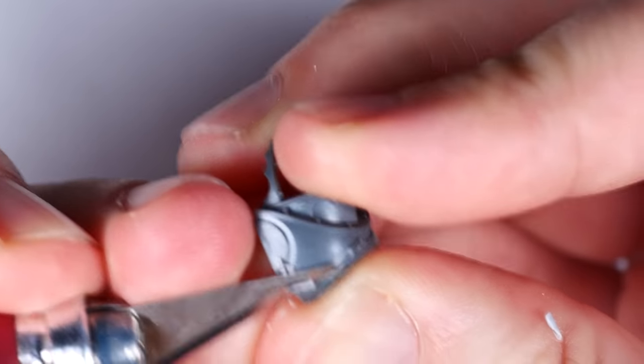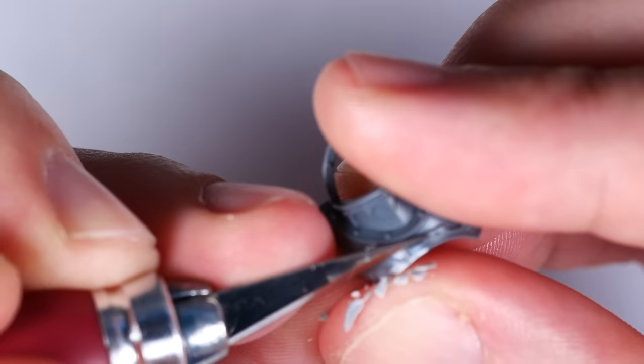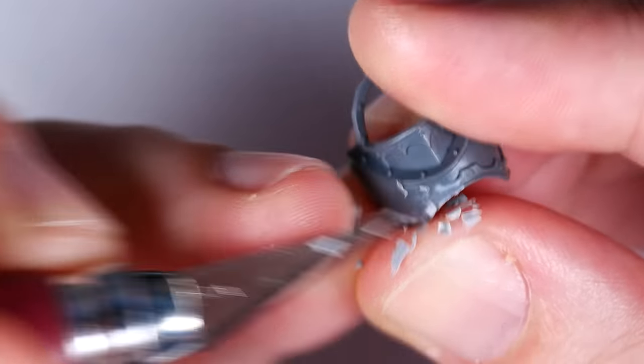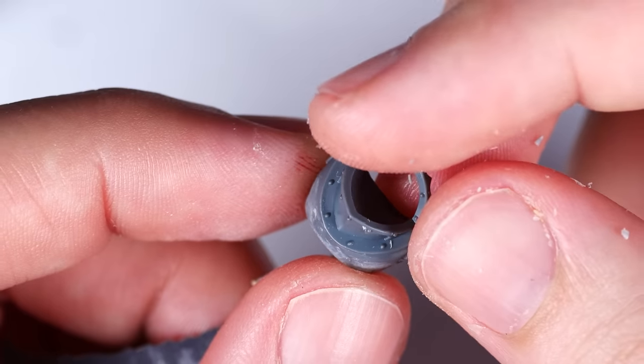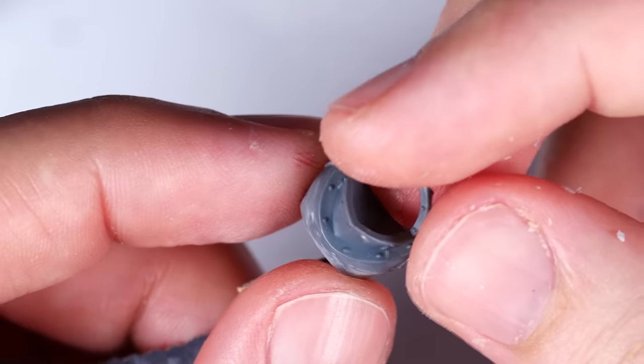For the torso however, I did decide to add a little more bulk to distinguish them from the rest of the Cataphractii terminators in my army, and to do this, I start off by removing all of the trim on the lower torso in much the same way as before.